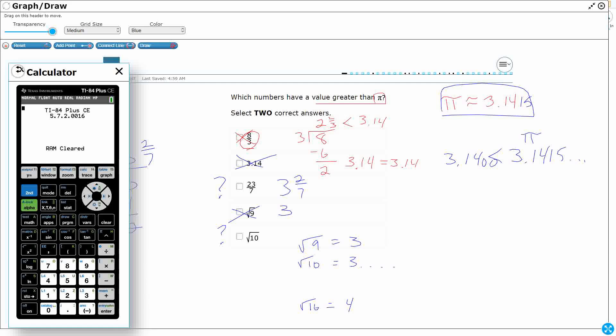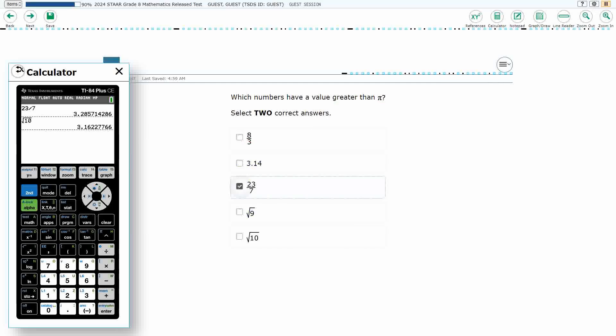Let's get our graphing calculator. And so what we're going to do is we're going to see 23 divided by 7. There we go, 3.2857. Definitely greater than the 3.1415. So that's a good one there. And then let's do the square root of 10. So hit the second, hit the x squared, get the 10. Oh, barely. 3.1622, definitely greater, but just barely than pi. So those are our two answers.